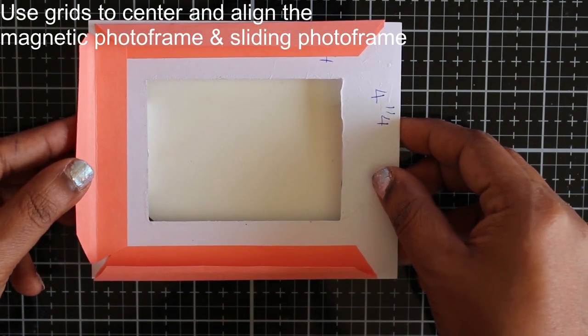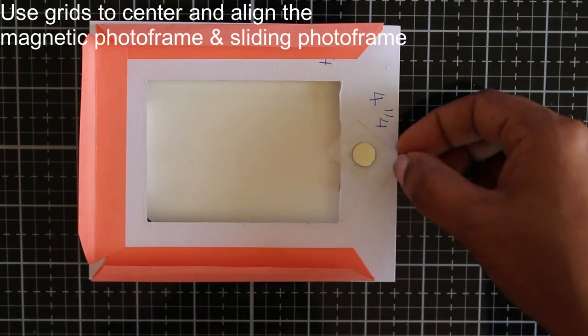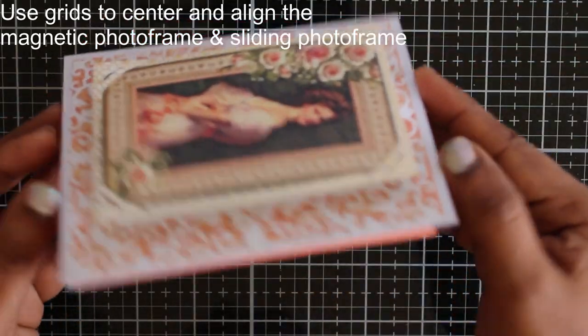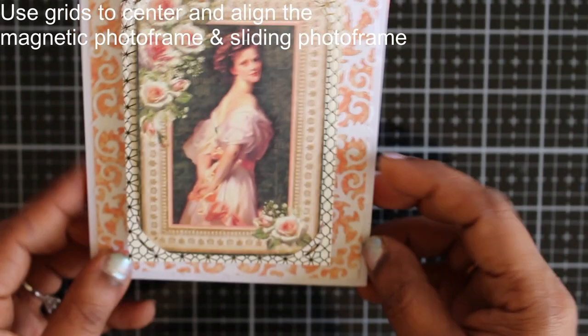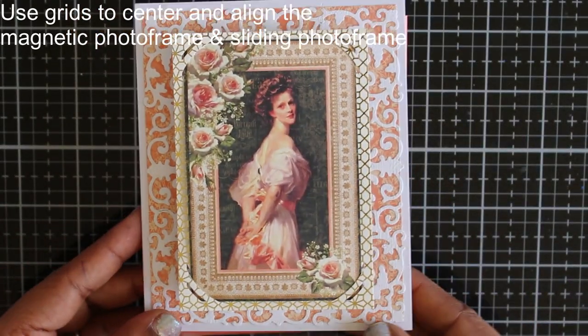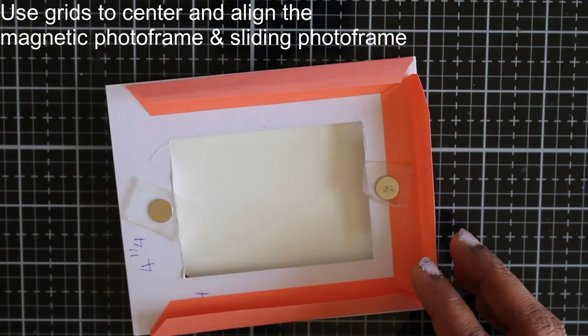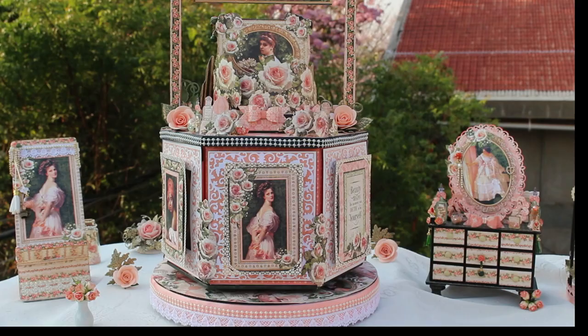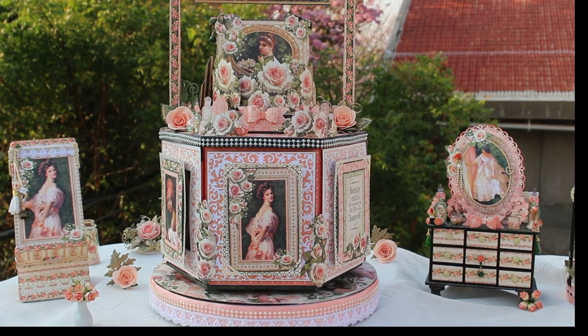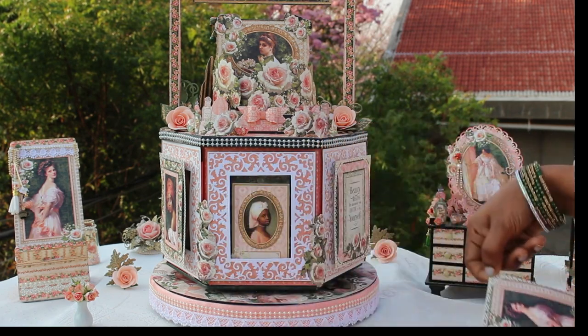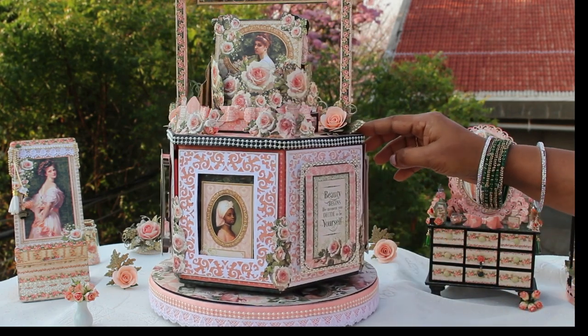So align the photo frame and the photo mat using a grid surface. I have used my glass mat here. So that is how you put the magnets. Make minor adjustments to align it perfectly. Now you can stick the magnets in place using pattern paper as a cover. So this is how it looks. As I have already shown you earlier in this video.